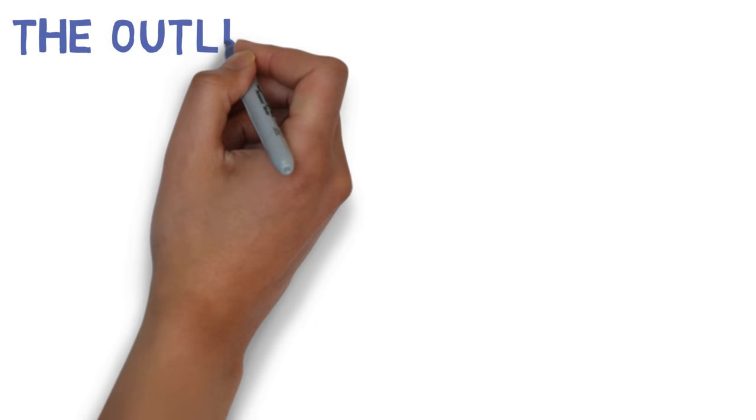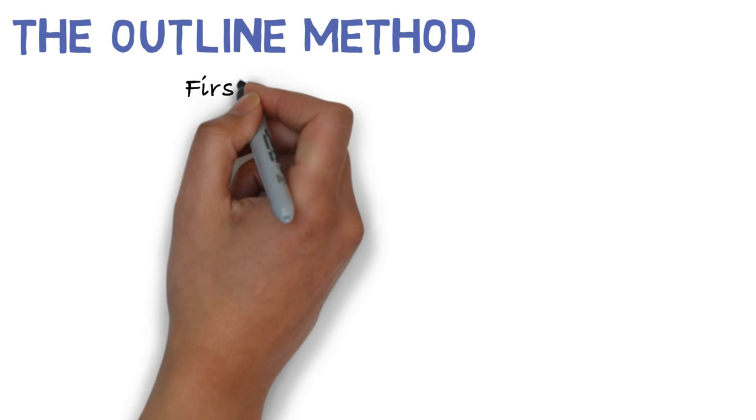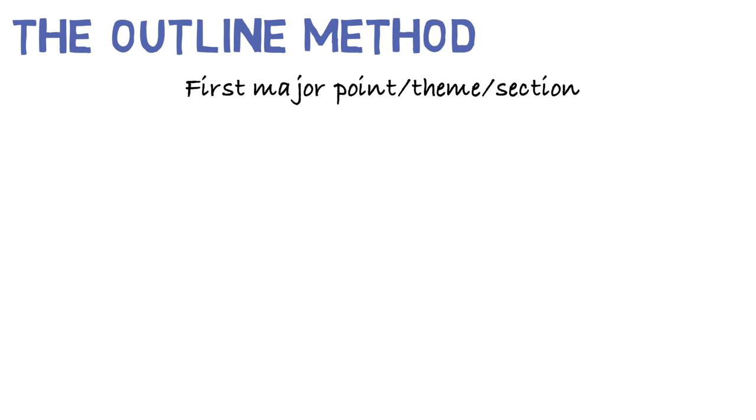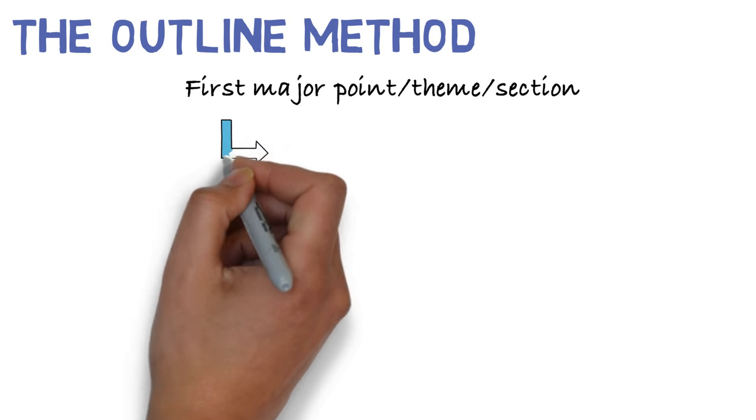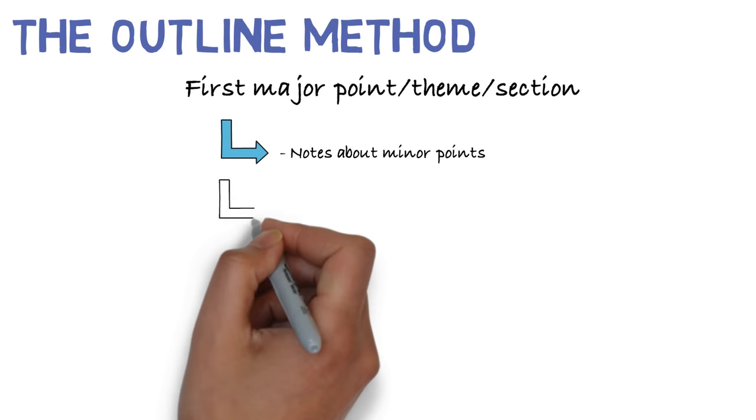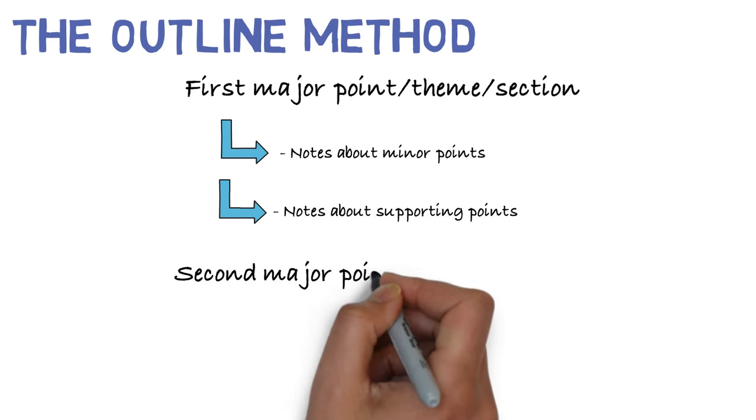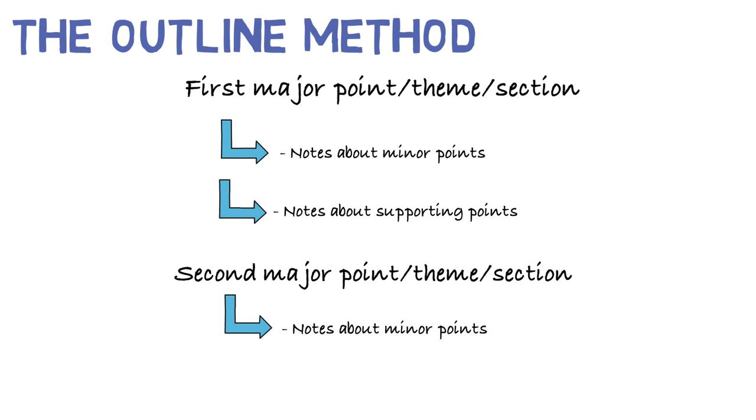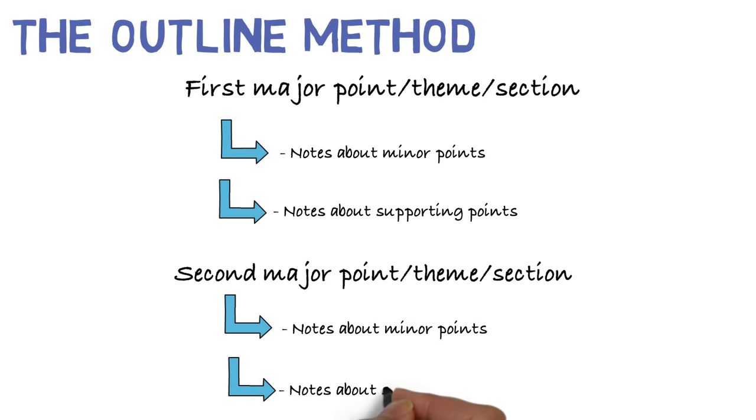Most students use this next method without knowing there's a name to it. In the outlining method, start with noting a major point, theme, or section on the left side of the page. Indent to write notes about minor and supporting points underneath the major point. Label your indented points using numbers or bullet points. The outlining method is best used for classes that require highly structured and logical notes.